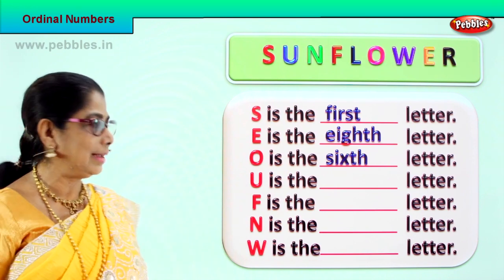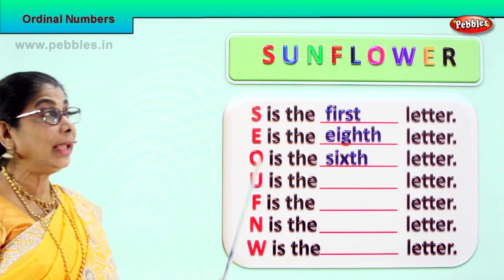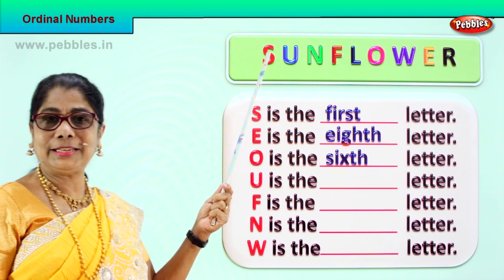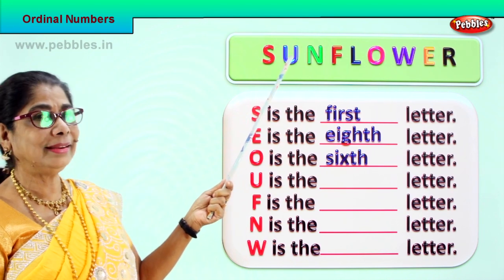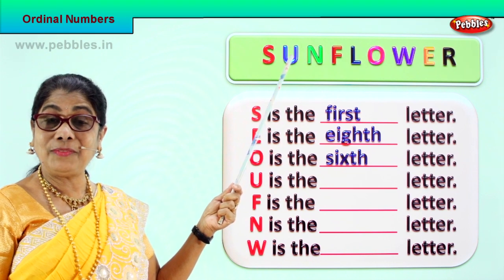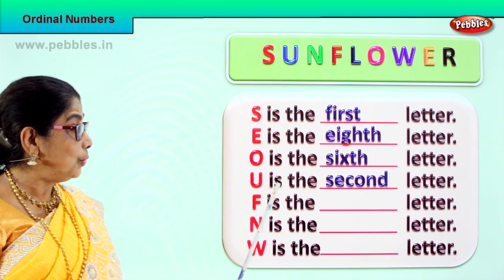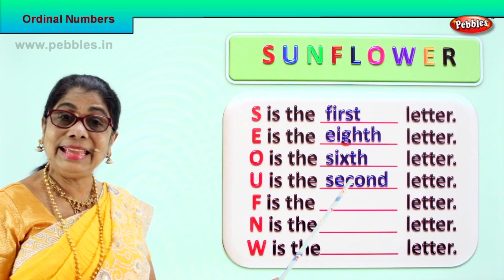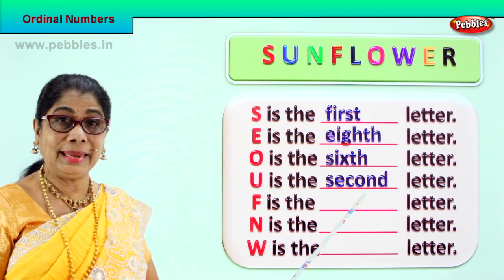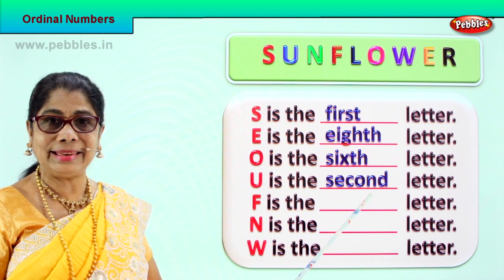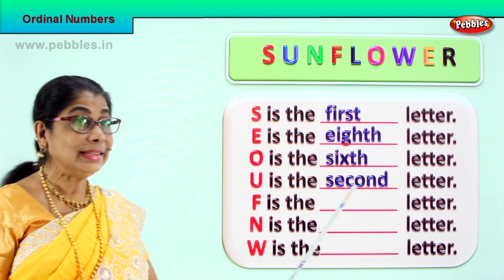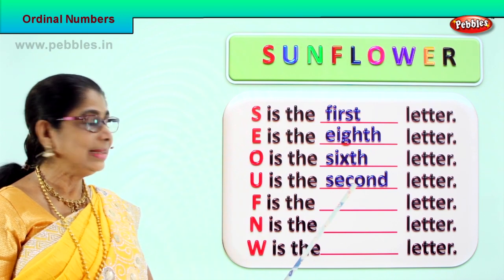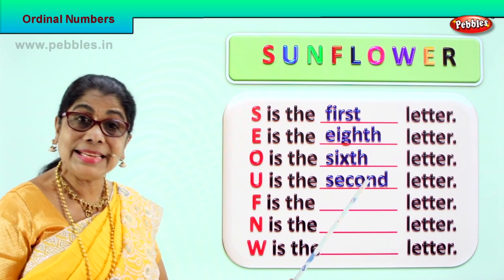Now let's take another exercise. U in sunflower — where does U come? S is first, second. U comes second. So U is the second letter. Spell second: S-E-C-O-N-D. Second. U is the second letter. S-E-C-O-N-D. Second. Good.